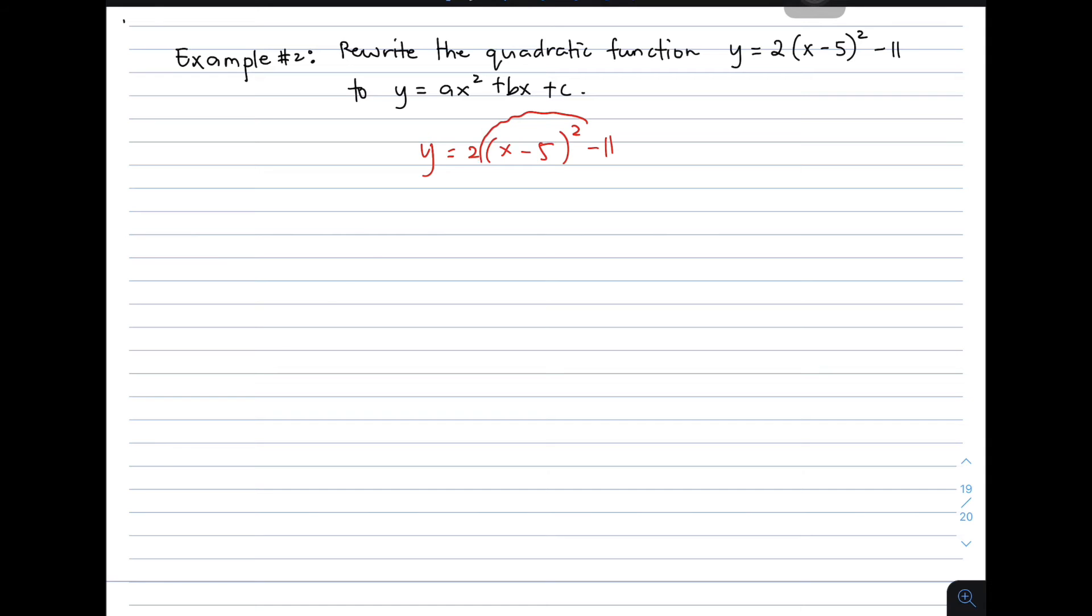We have y equals 2 times x minus 5 squared minus 11. Basically, all you need to do is to expand this one. You have y equals 2 times, square the first term, x squared.